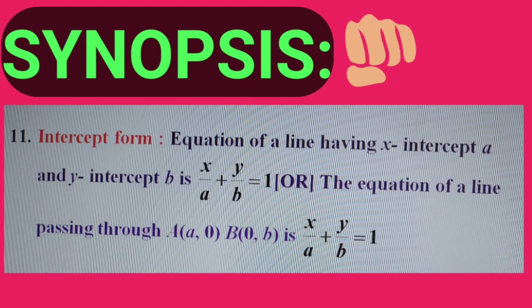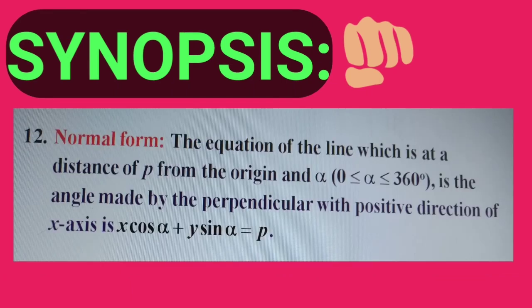Next: intercept form. The equation of a line having x-intercept a and y-intercept b is x/a plus y/b equals 1. Or, the equation of a line passing through (a, 0) and (0, b) is x/a plus y/b equals 1. Next: normal form. The equation of the line at a distance b from the origin, where alpha is the angle made by the perpendicular with the positive x-axis, is x·cos(alpha) plus y·sin(alpha) equals b.